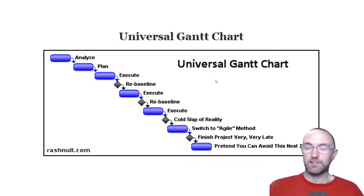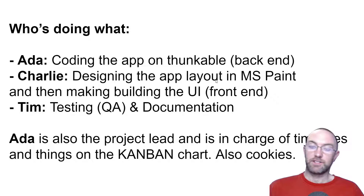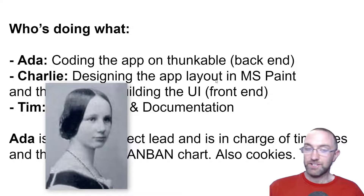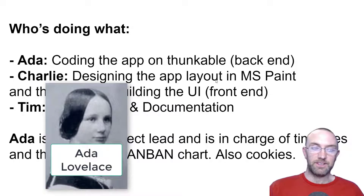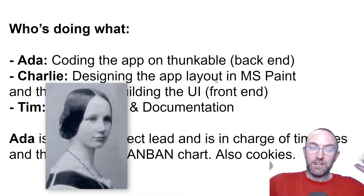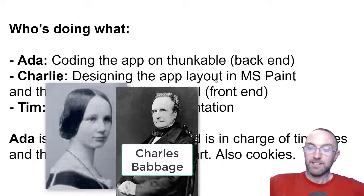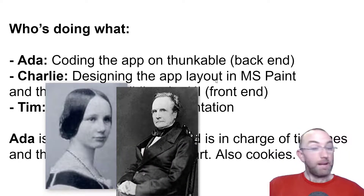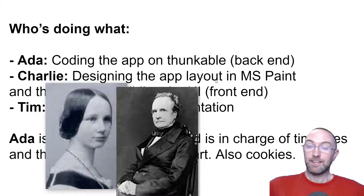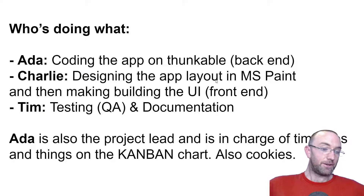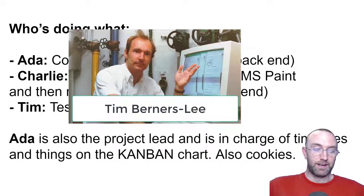Whoever's in charge is going to have to come up with a project timeline - when it's to be done - and decide who's doing what. In this case, Ada is the project lead; she'll do the coding, the back-end parts. Charlie is very good at art and prides himself as a Microsoft Paint master, so maybe he'll wireframe it with pen and pencil - he's the front-end developer.